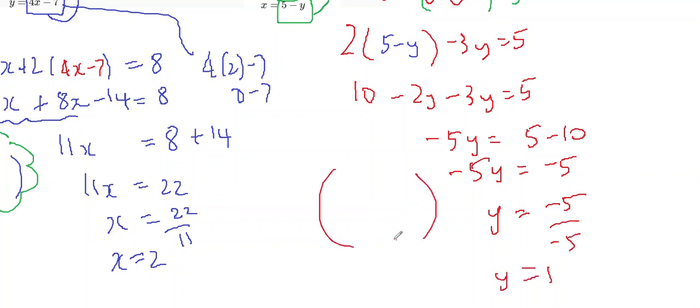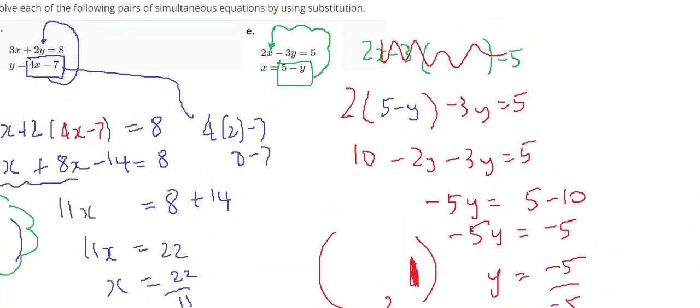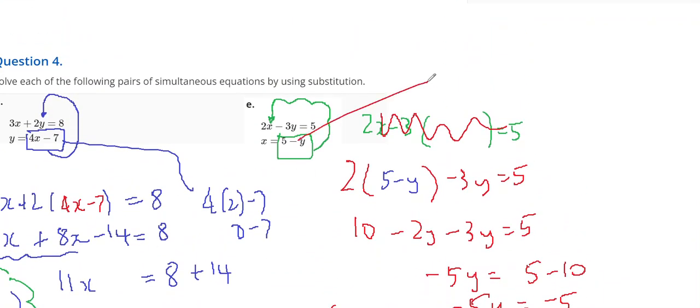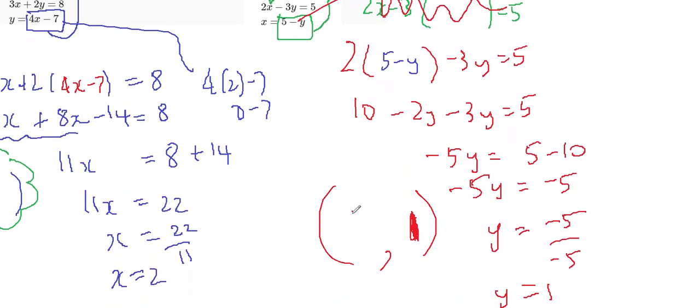So, to my solution, I have this part of the answer. To find what x equals, I'm going to sub it in here. And x is going to equal 5 minus whatever y is. y is 1. So, x is going to equal 4. So, there's fluency questions 3 and 4.